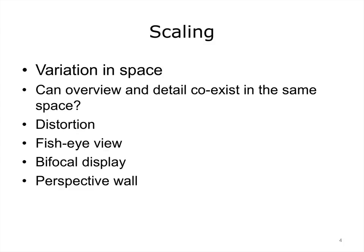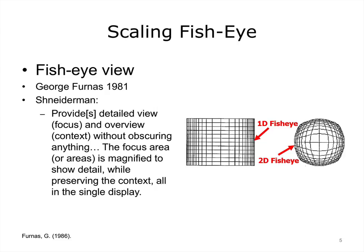Let's take a more detailed look at different scaling techniques. The three common ways to provide overview and detail on the same screen are fisheye views, bifocal display, and perspective wall. Fisheye views follow the same principles as a fisheye lens on cameras — they show the central focused area in great detail and all areas outside of this focus in a condensed way to preserve context.